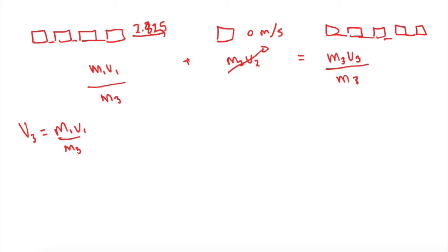So V3 is equal to M1V1 divided by M3. So when you plug in the numbers, since we're saying these are 4 kilograms, we get M1 is 4 kilograms times 2.825 over 5 kilograms. So really mathematically, what's going on here is we're saying that after these trains hit this, we are going to get 4 fifths of the speed that we had initially. So we take 4 fifths times 2.825, and that gives us our final speed, which is 2.26 meters per second.